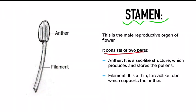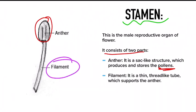The stamen consists of two parts. The first part is called the anther — it is the top sack-like (bag-like) structure which produces and stores pollen. Pollens are small dust-like particles which are necessary for reproduction. The second part is the filament — a thin thread-like tube which supports the anther above it.